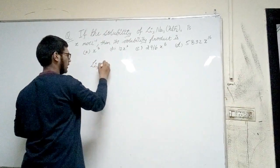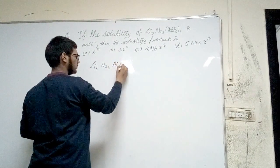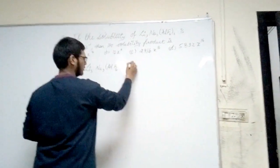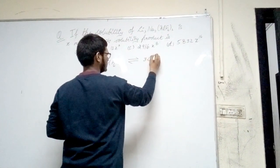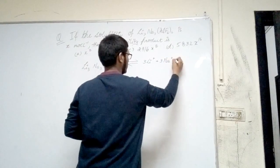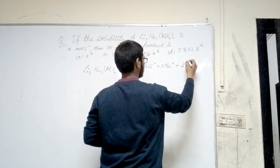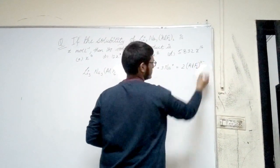Li3Na3(AlF6)2 in equilibrium gives 3Li+, plus 3Na+, plus 2AlF6 3-.